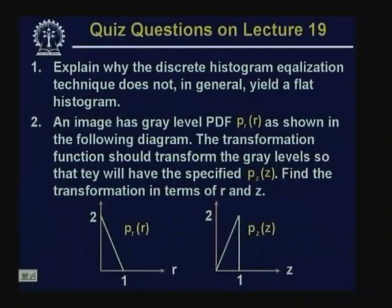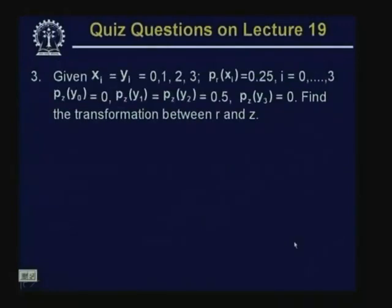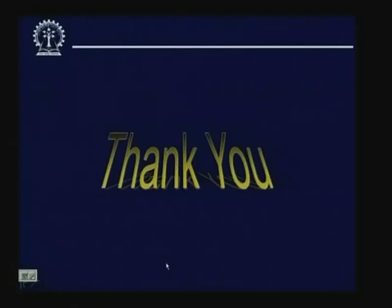Regarding the condition the target histogram must satisfy for histogram specification: the transformation function G must be monotonically increasing, which is only possible if P_z(Z) is non-zero for every possible value of Z. That is the condition the target histogram must satisfy. Today's questions are: explain why discrete histogram equalization does not in general yield a flat histogram; given specific PDFs P_r(R) and target histogram, find the transformation from R to Z.